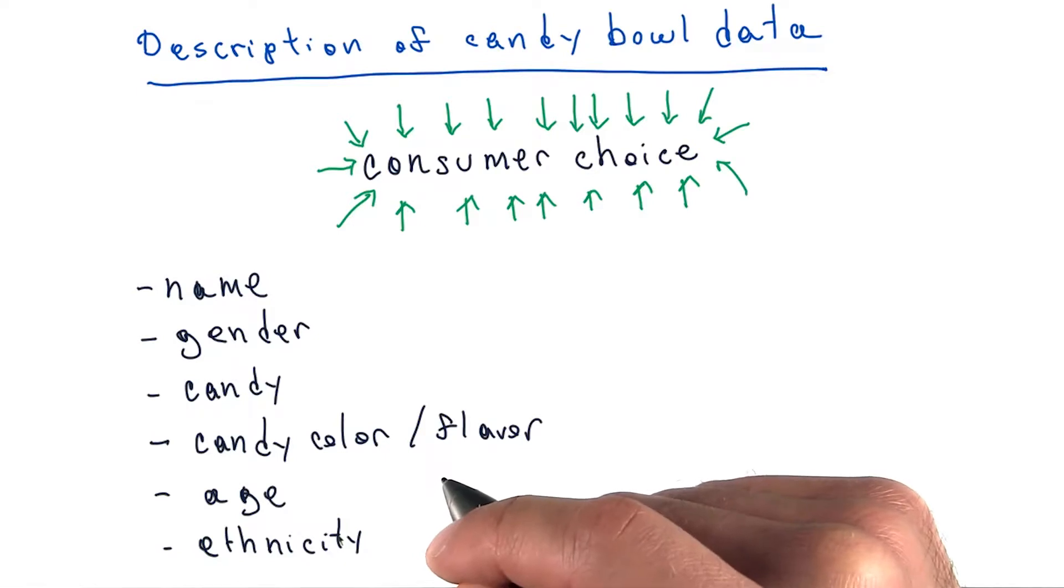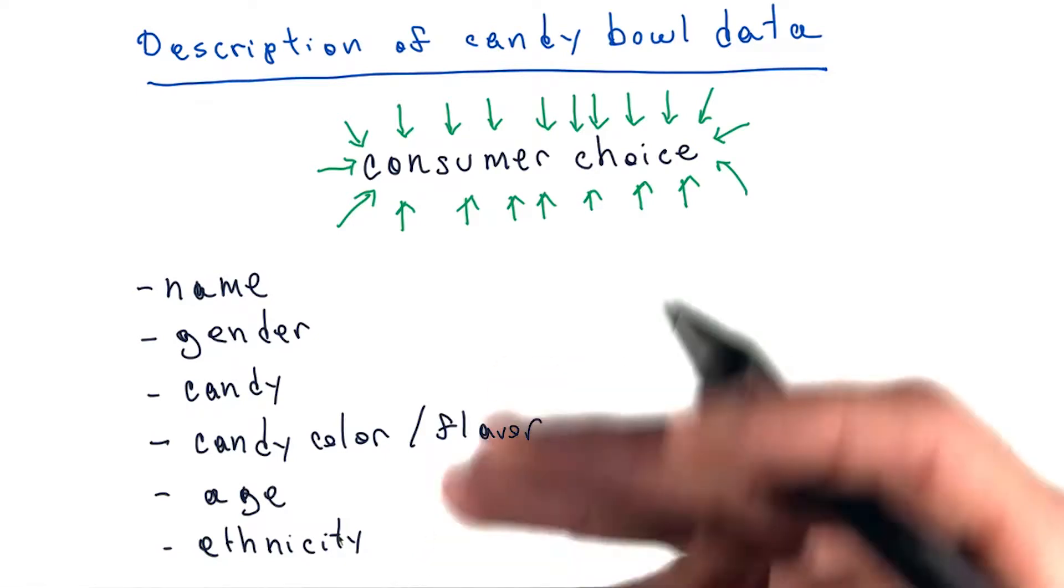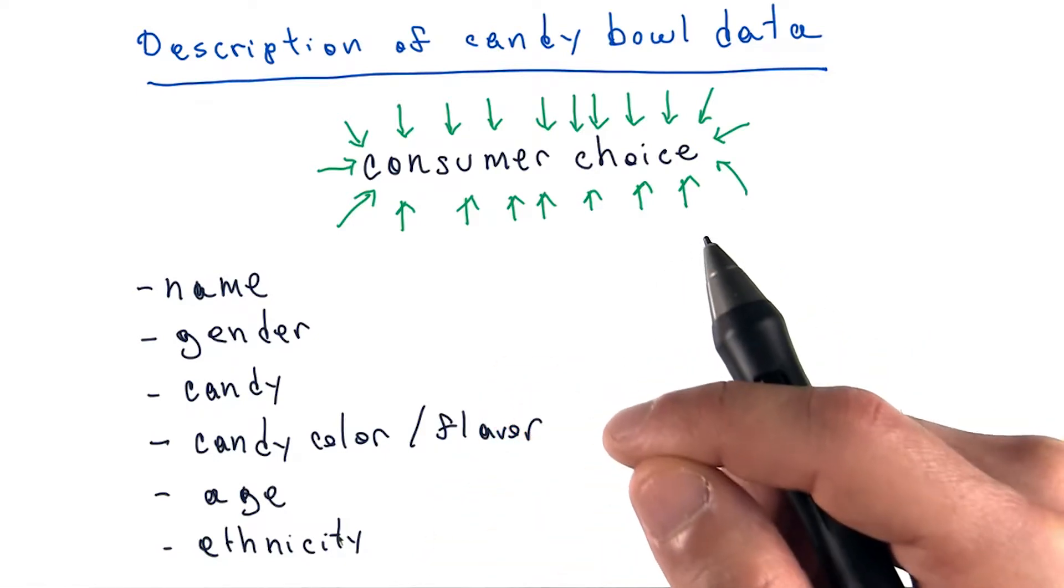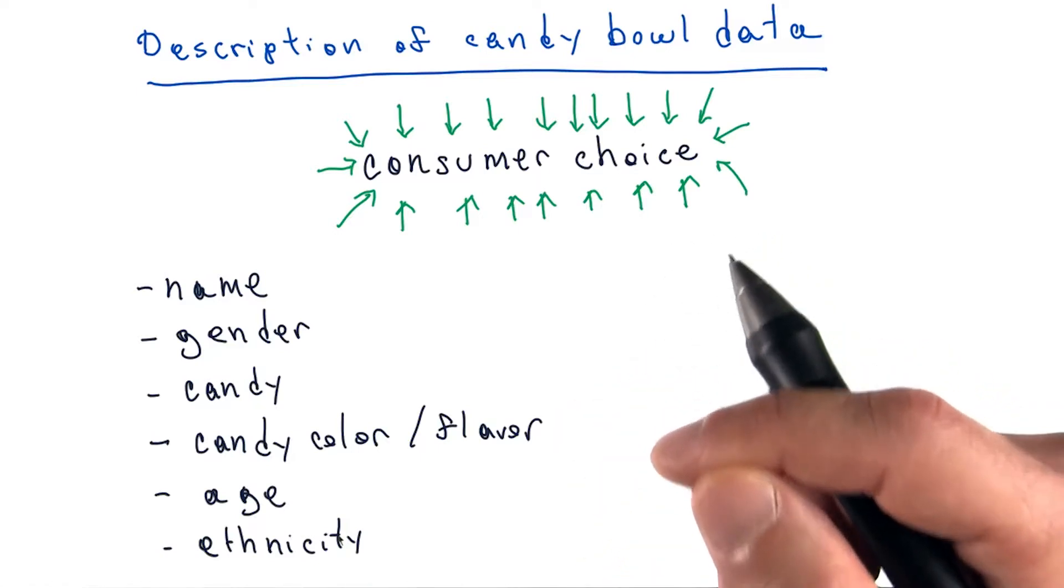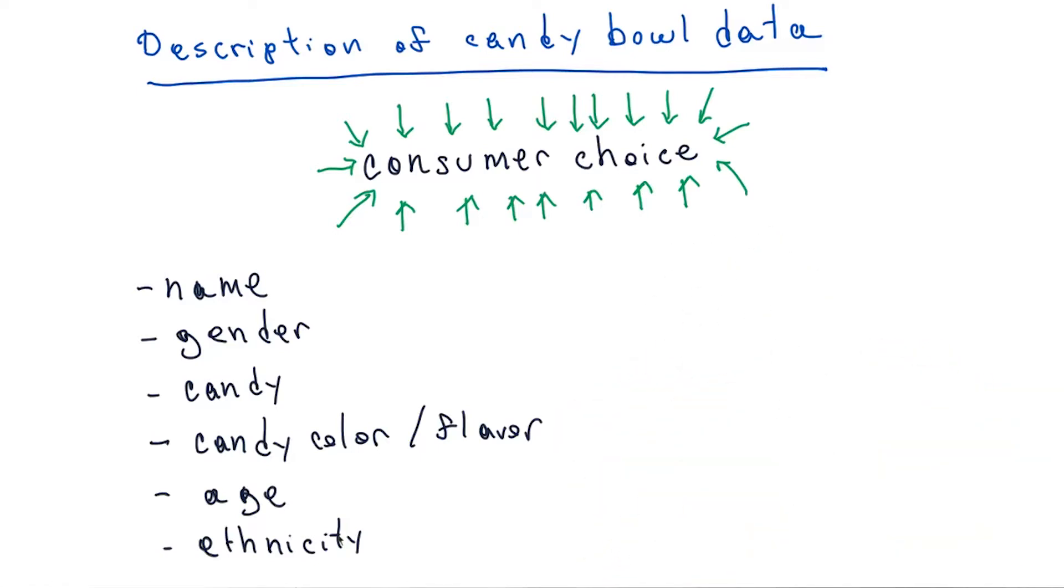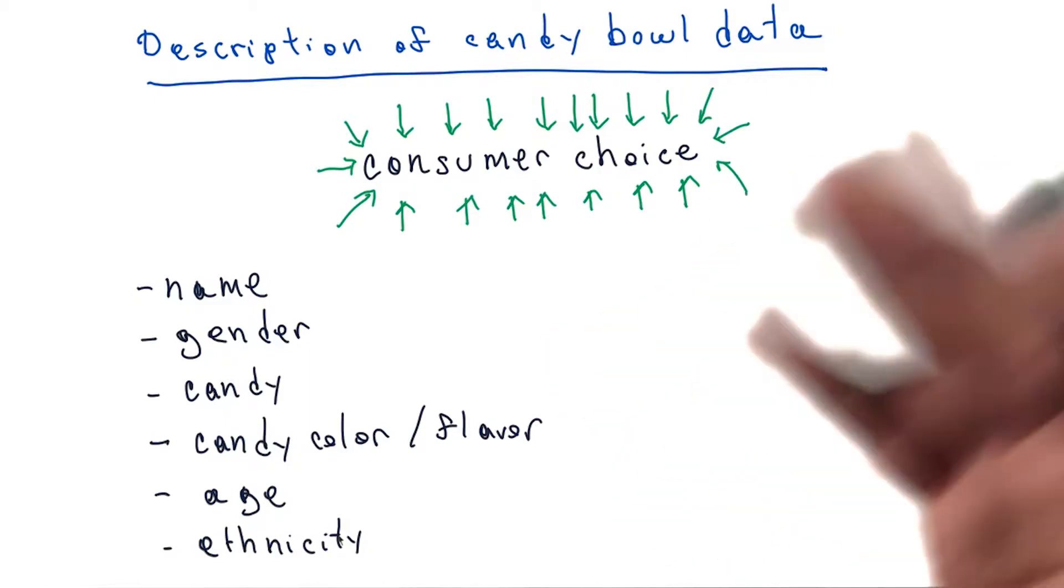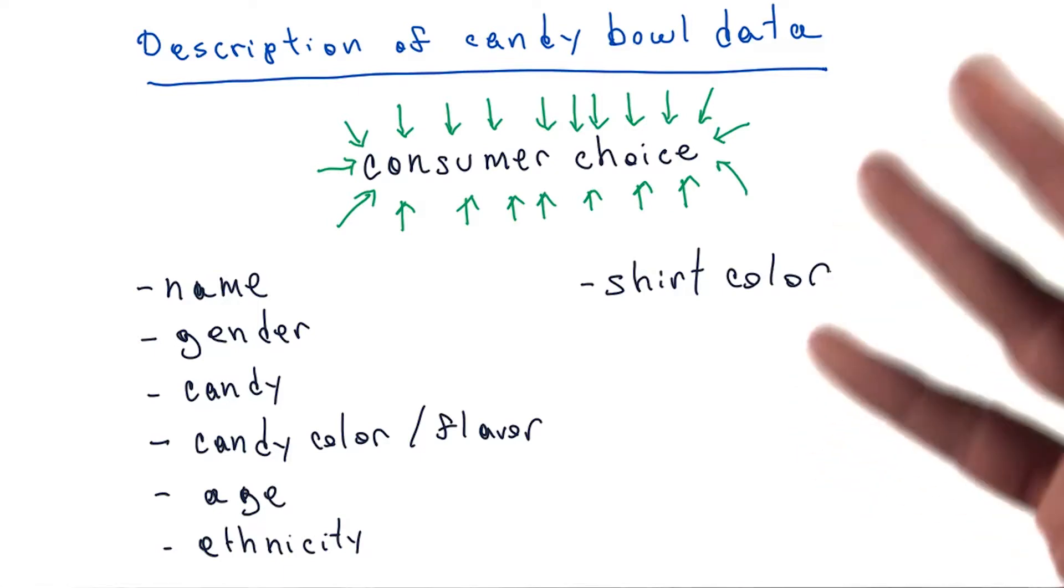In addition to that attribute, in order to establish a baseline, we also wanted to include a spurious attribute. That way, any attribute that was ranked as having a weaker relationship than that one, we knew that we could safely ignore it. So as our selection of a spurious attribute, we chose shirt color.